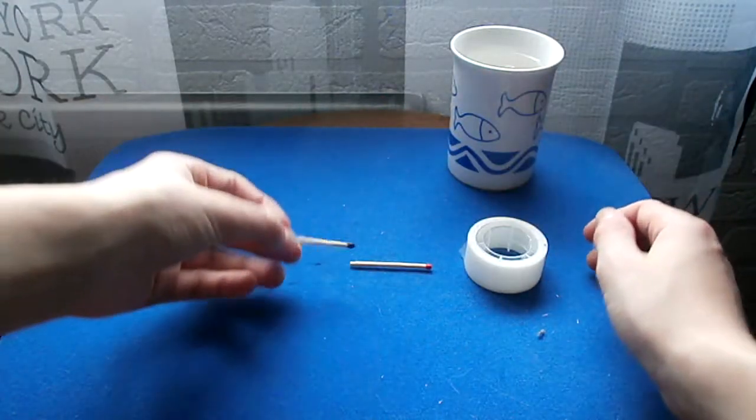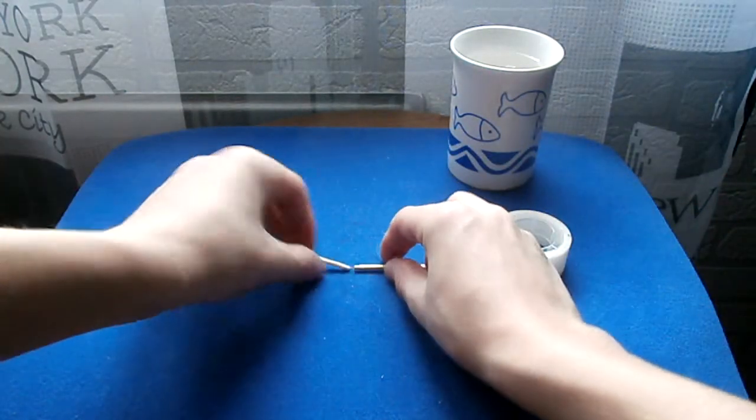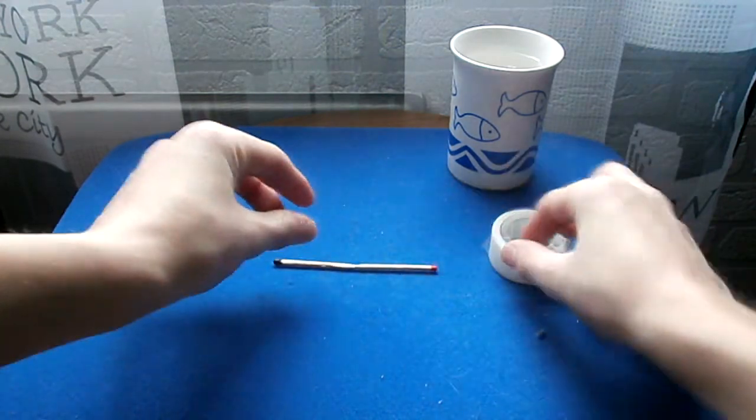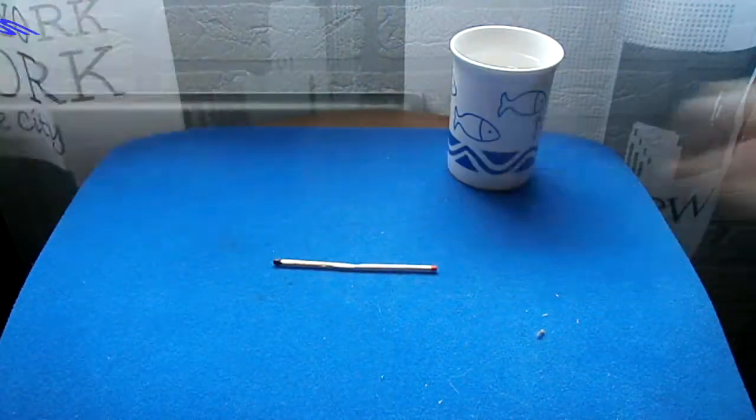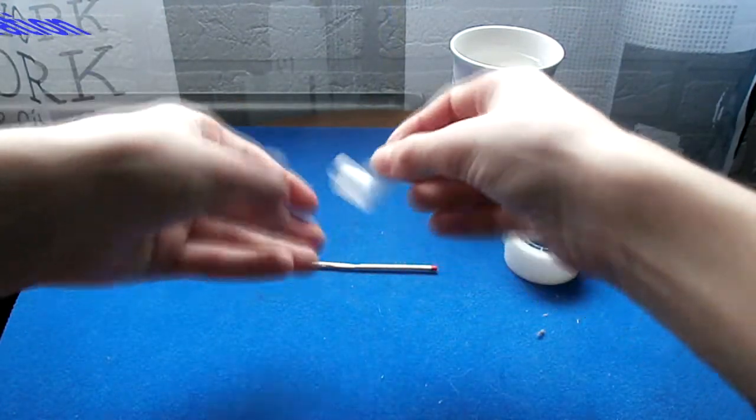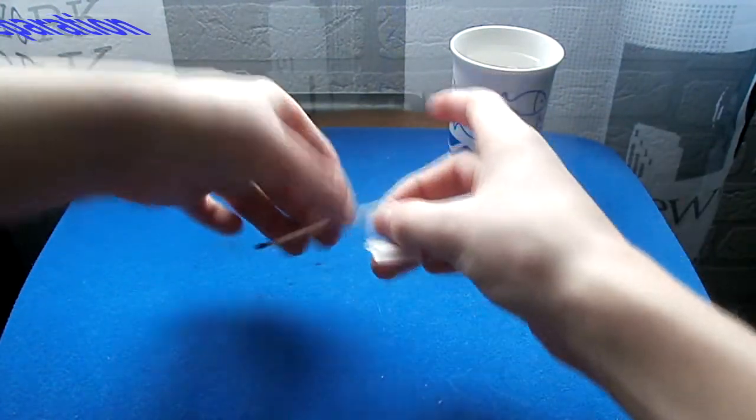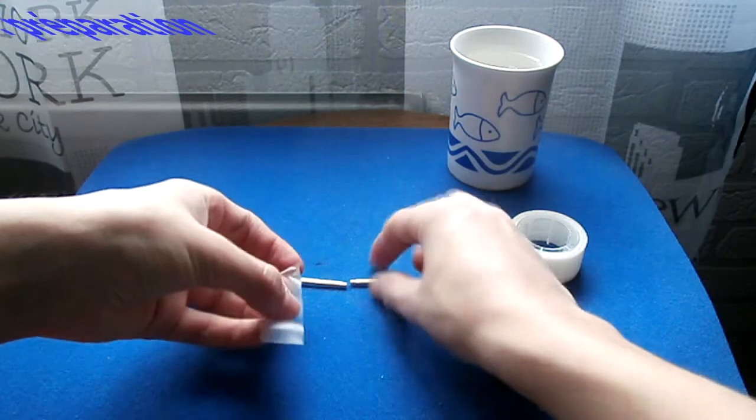Alors une fois que vous avez bien colorié tout en noir, vous allez devoir accrocher les deux allumettes, comme ceci, avec du scotch. Donc vous découpez à peu près un bout de scotch, comme ça, et vous accrochez donc les deux allumettes.